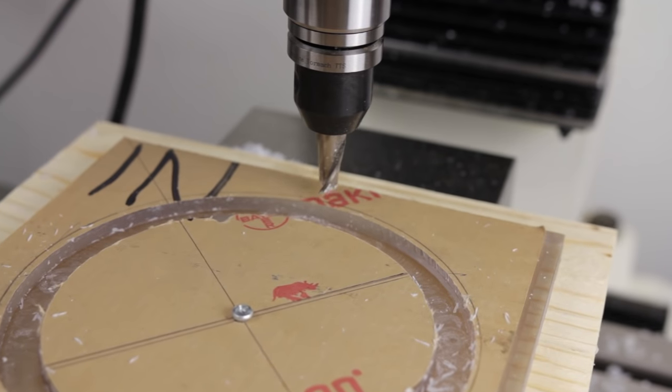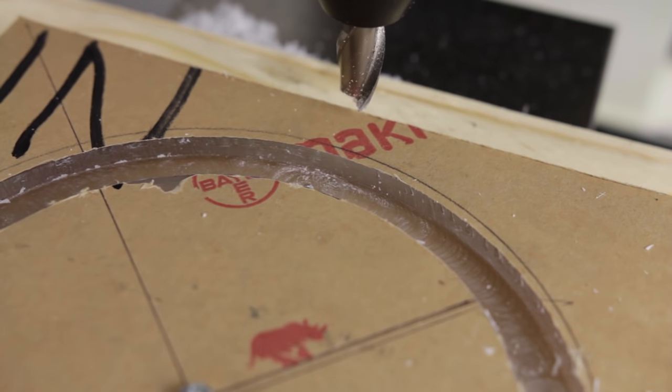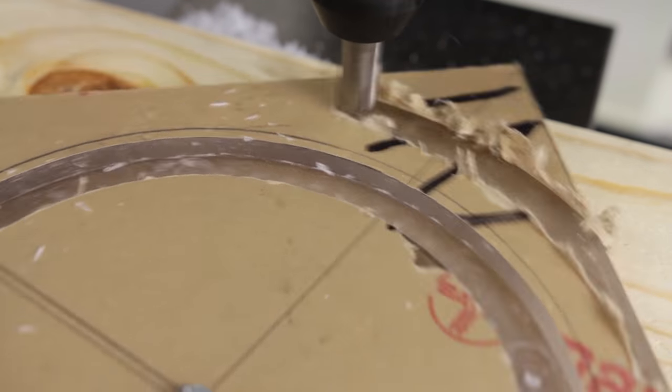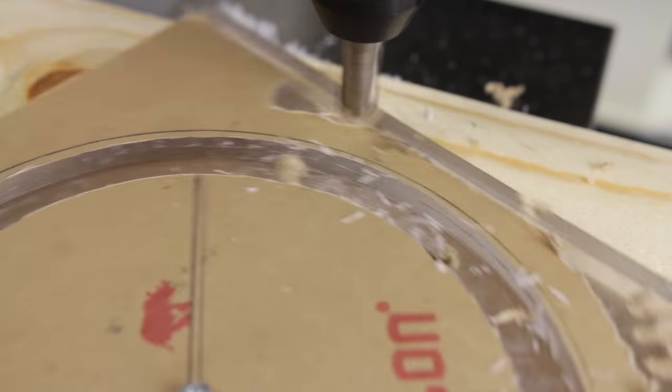Once the slot is complete, I move the end mill half an inch from the slot to round the sides of the top. This part is strictly for aesthetics and not necessary if you prefer a square top.